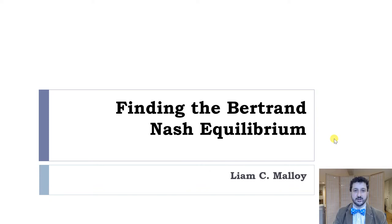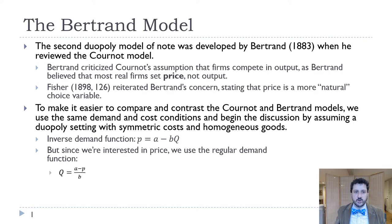Bertrand, writing almost 50 years after Cournot, says firms don't choose quantity — they don't choose how much they're producing. They choose price, and then they compete on price. Fisher agreed that that seems like a more natural choice variable.